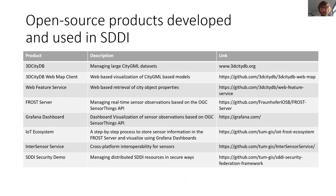A number of products were developed as part of this project — most of the implementation was done by colleagues in Munich, Germany, who made many components available. Several were developed by others but provide a useful overview of tools that can be reused in other contexts. The 3D City DB was developed before this project but provides a way to visualize CityGML data in a web browser using the Cesium browser.